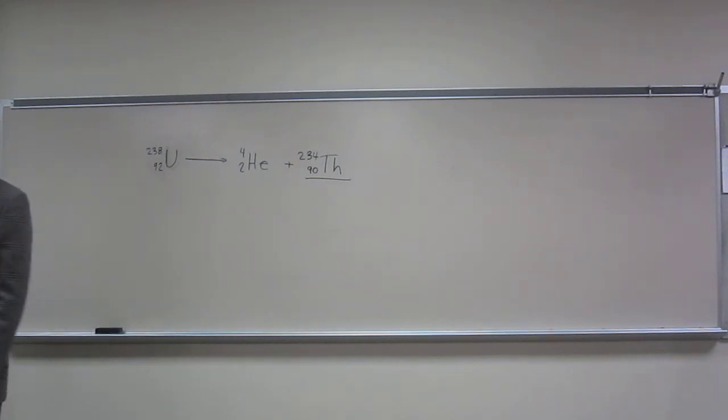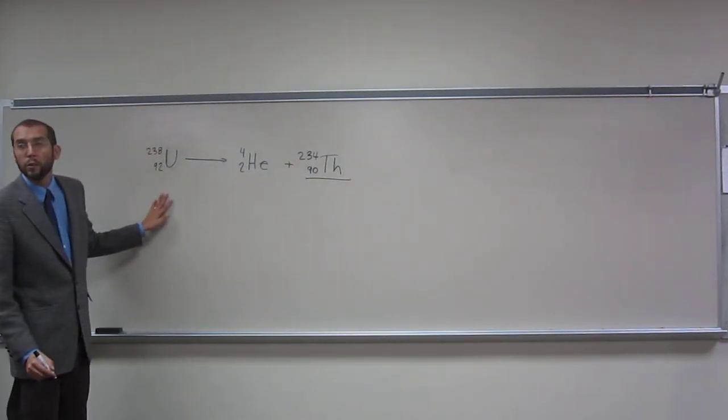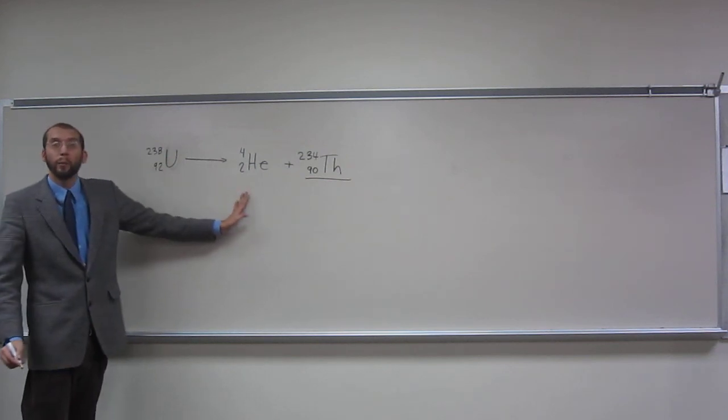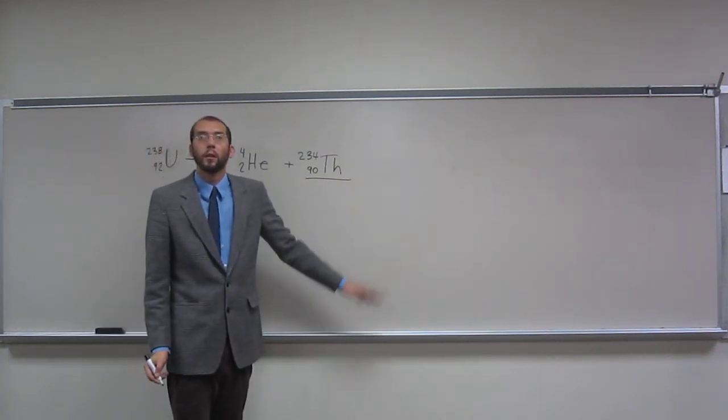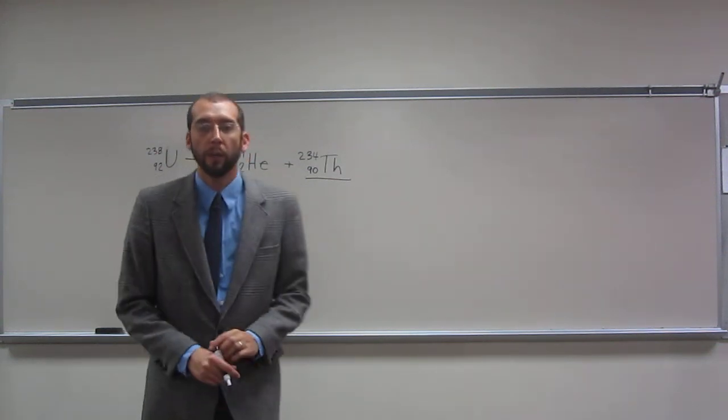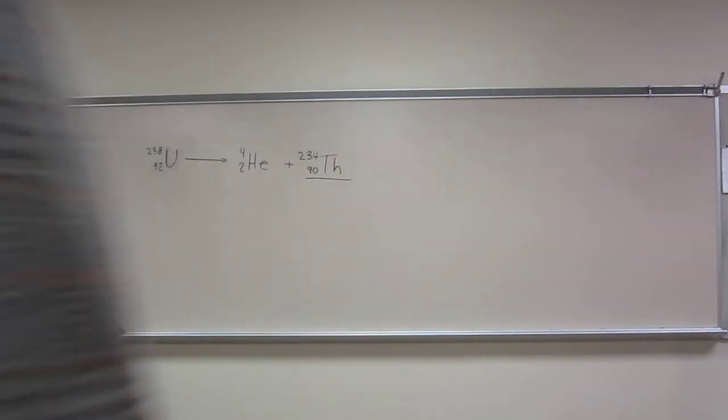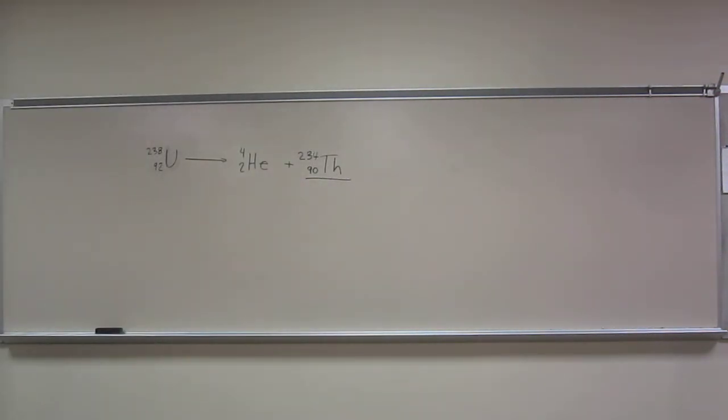So thorium-234, okay. So in other words, when uranium-238 emits an alpha particle, we get thorium-234. So I think these are pretty basic. I think you guys can do these on your own. Maybe we'll go over one more of these types of things.